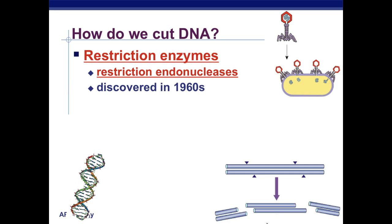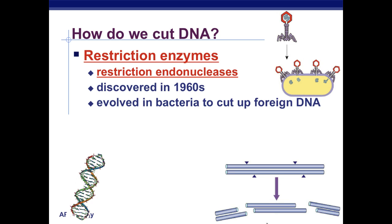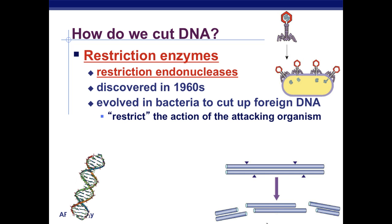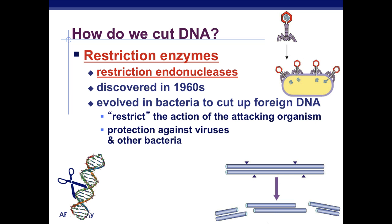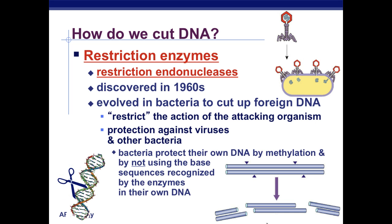Restriction enzymes were discovered in the 1960s. They evolved in bacteria to cut out foreign DNA — to restrict the action of an attacking organism — and for protection against viruses and other bacteria. Bacteria protect their own DNA by methylation and by not using the base sequence recognized by the enzymes in their own DNA.